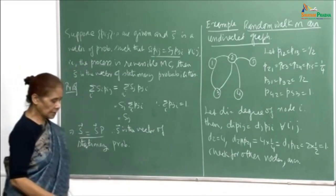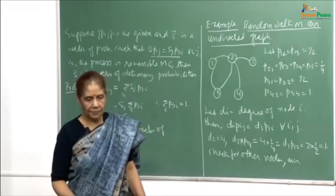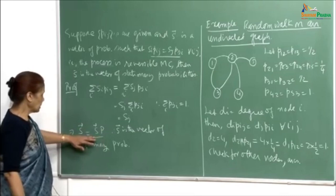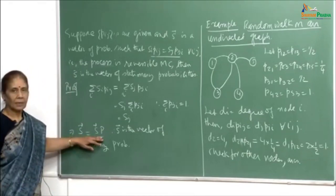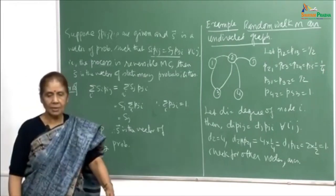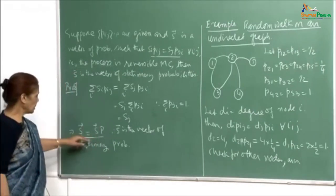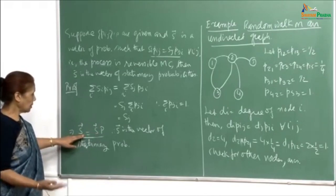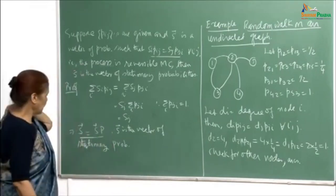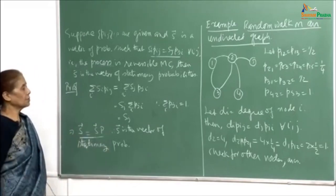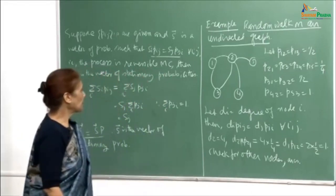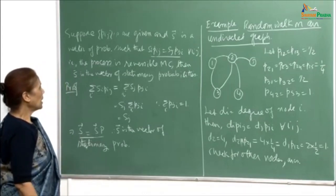We now know that for any system, if we can find a vector s and transition probabilities for a Markov process satisfying the reversibility condition, then s must represent the stationary probability vector. We will look at examples of reversible Markov chains showing that computing state probabilities is very easy — you do not have to apply matrix or iterative methods to solve for s. When the number of states is very large, solving systems of linear equations can be very tedious, but through examples we will show that computing state probabilities is simple.